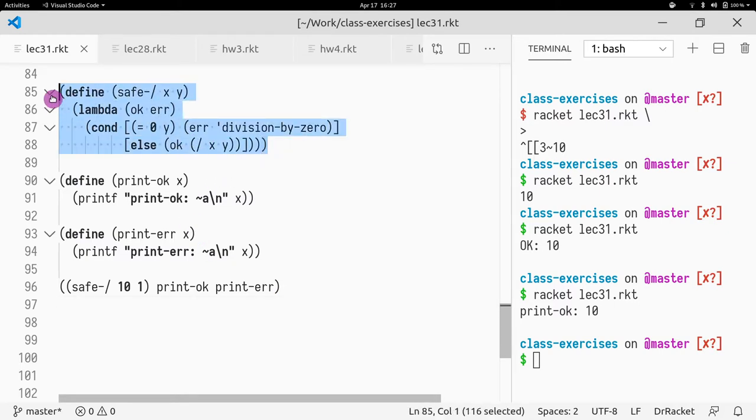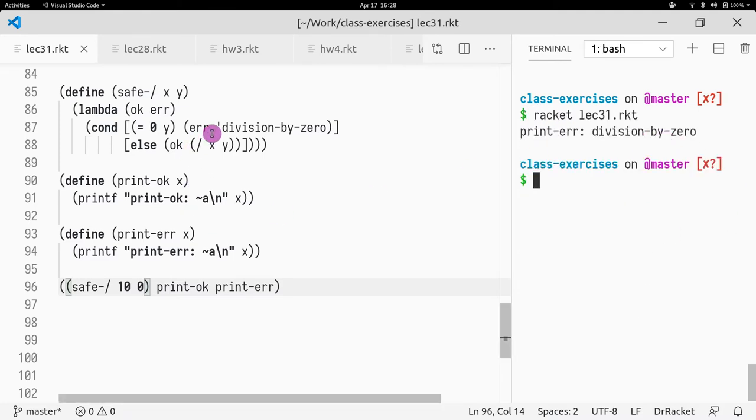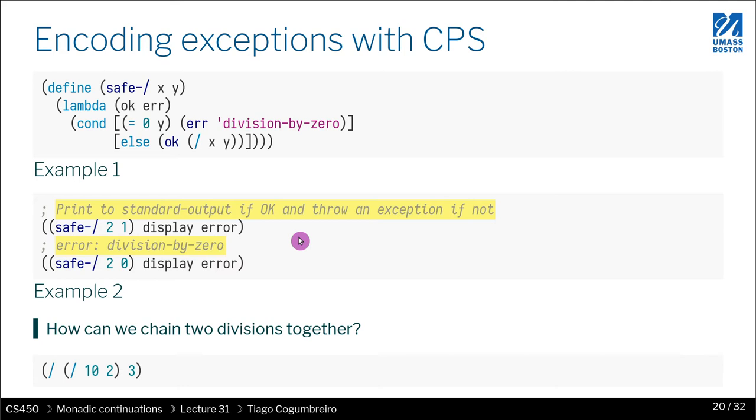So with this, this is known as continuation passing style. Again, because the return value is communicated to another function. And that happens in both branches. And that's the only way we have to communicate returning values. And we are encoding the notion of their existing two different return values. By convention, the left-hand side means the result was okay. And the right-hand side means the result was an error. Now let's do the case, divide 10 by zero. And I get division by zero, which is exactly what happens.